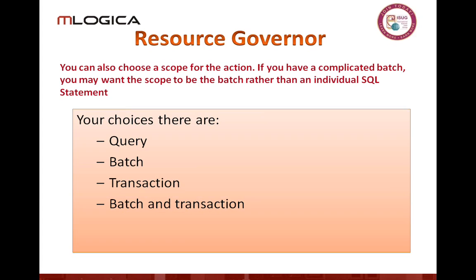The next step up is batch. We can say I don't want this batch — meaning a potential collection of queries — to fetch more than a million rows. We can do this for a transaction as well. A transaction will span batches, so multiple queries in a batch, potentially multiple batches in a transaction. And we can say if this transaction is calling a million IOs, go ahead and kill it.